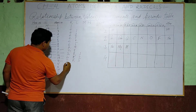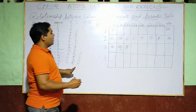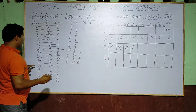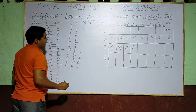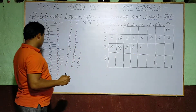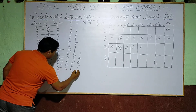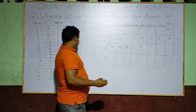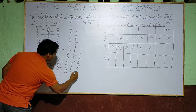Silicon has configuration 2, 8, and 4 — placed in Group 4A, Period 3. Phosphorus has configuration 2, 8, and 5 — placed in Group 5A, below Nitrogen. Sulphur has configuration 2, 8, and 6 — placed in Group 6A. Chlorine has configuration 2, 8, and 7 — placed in Group 7A, Period 3.